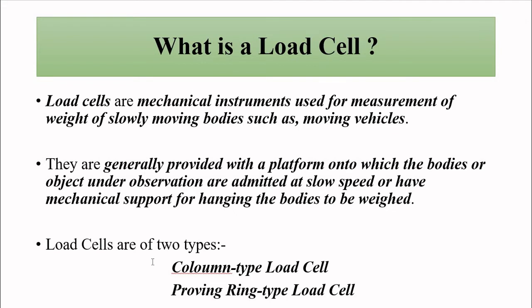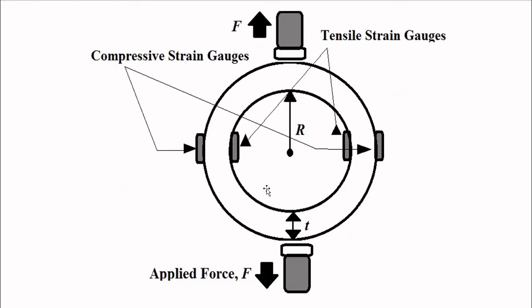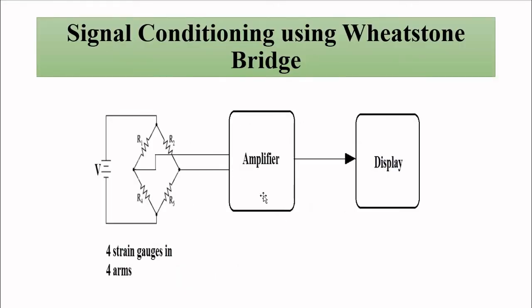I have made separate videos on these two types, so I recommend you to watch those. This is a basic column type load cell — it is combined with strain gauges to measure the expansion and compression occurring on it because of the applied force. This is the proving ring type load cell, again using the same principle: strain gauges applied at extreme ends. When force is applied they undergo compression and expansion, resulting in a change in resistance because strain gauges operate on the piezoresistive effect. Then suitable signal conditioning is done to give a proper output.